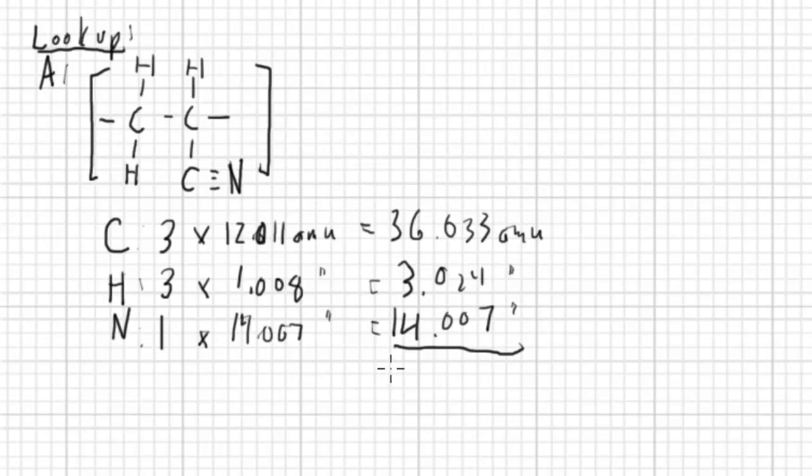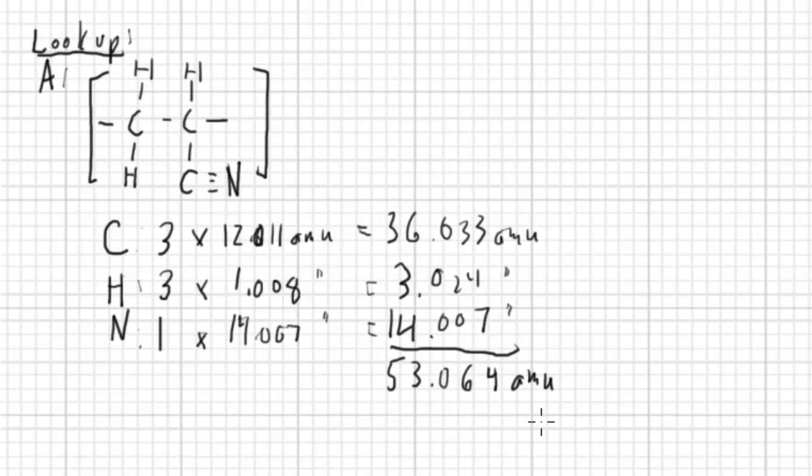We add all those up to find the mass of one of these repeat units. We end up with 53.064 AMUs per repeat unit.